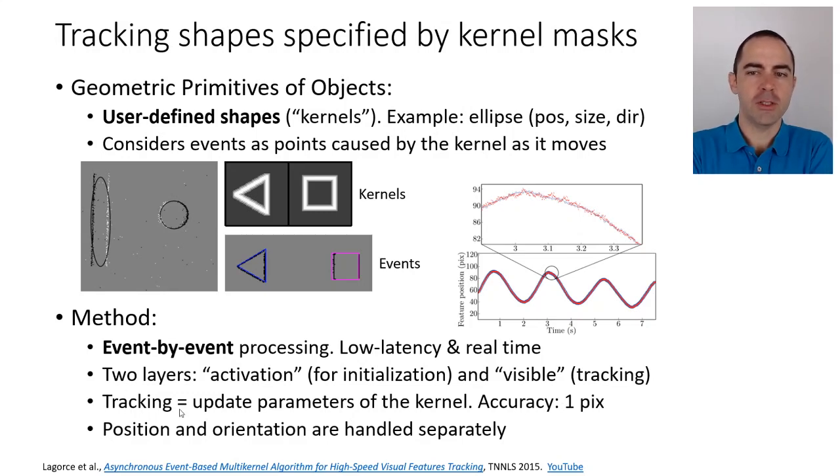What is the tracker? The tracker consists of updating the parameters of the kernel, mostly as written here, like the position, the size, the direction. It has an accuracy of about one pixel. You can see in this plot, which represents one of the degrees of freedom—feature position—the blue is the ground truth and the red ones are the updates with very low latency by the tracker. You see that on average it's tracking well and at a very high rate.